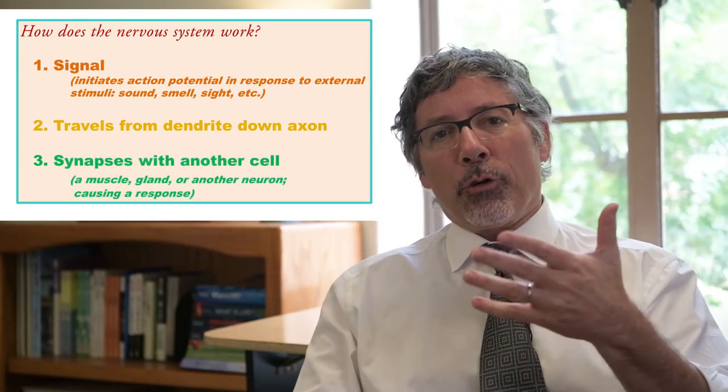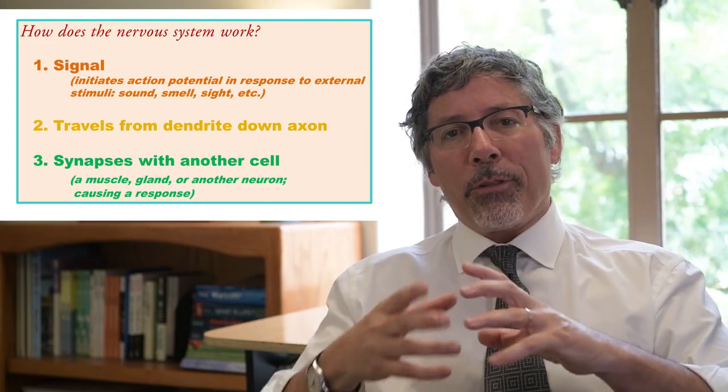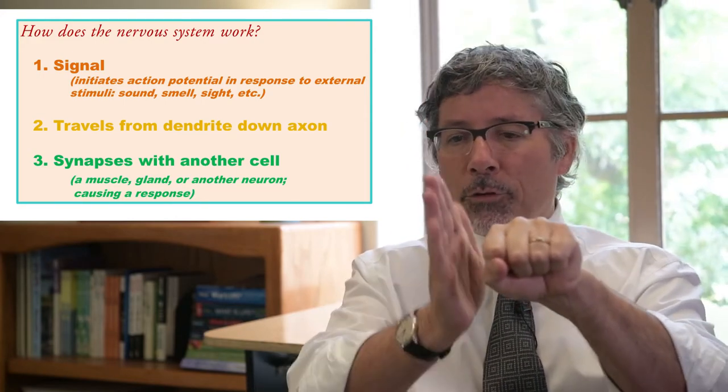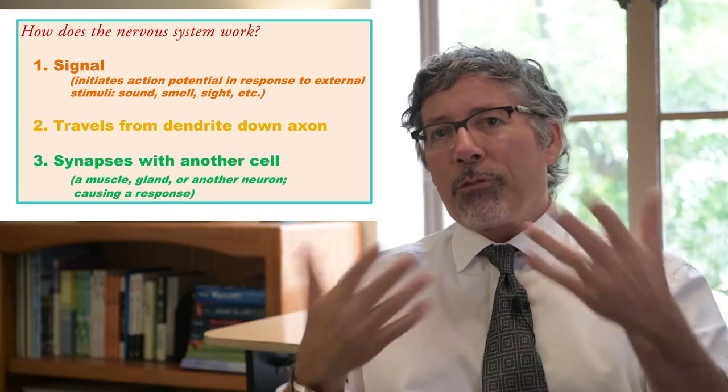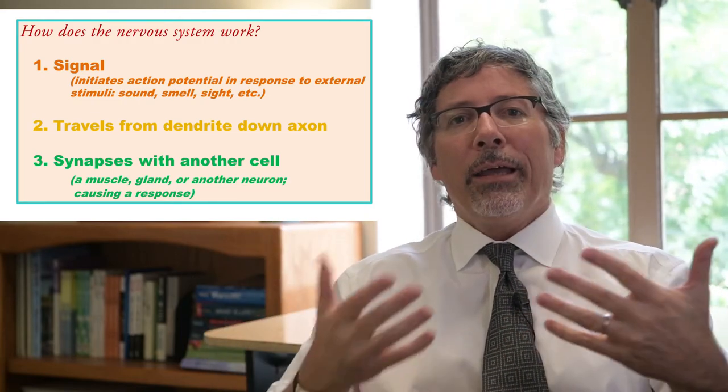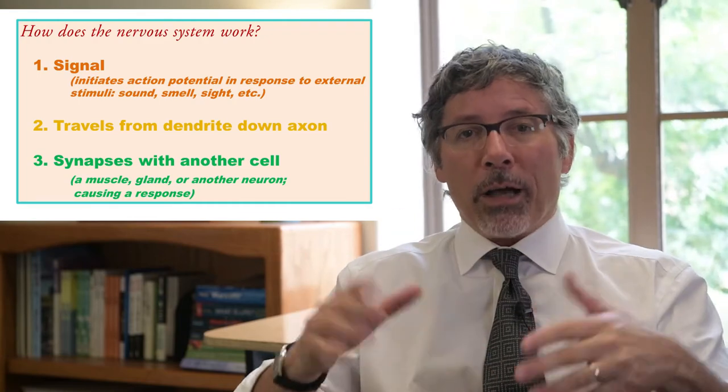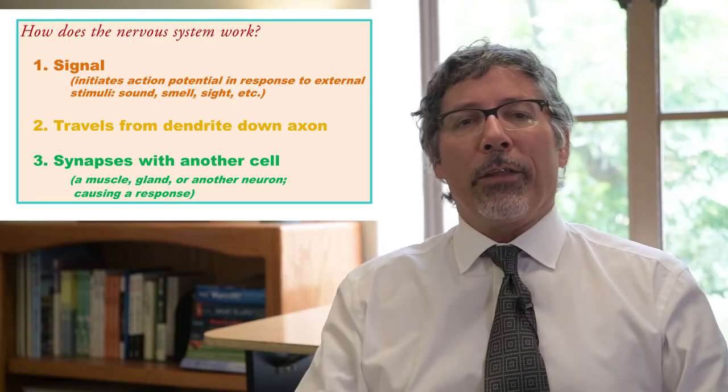At the end of the axon, at the terminal button, there's going to be a synapse. The synapse is the terminal button, the space between, and then the cell that is next to it. This muscle or gland or other neuron is maybe going to respond. There's going to be some regulation there, but that's how the cells work, typically.